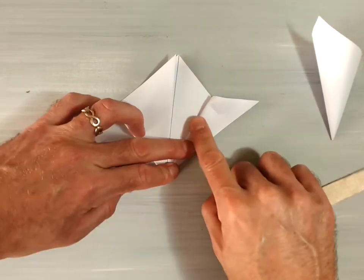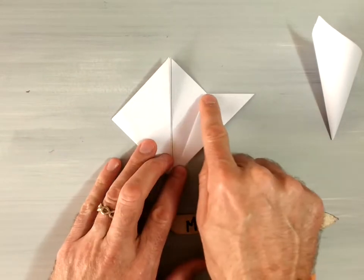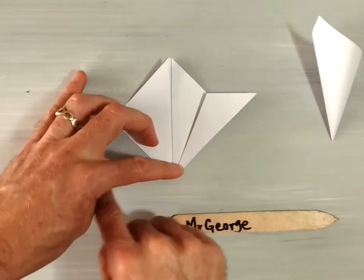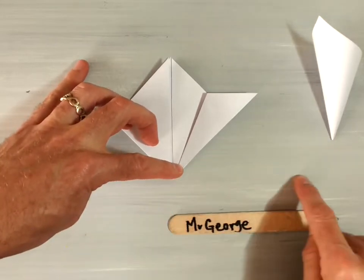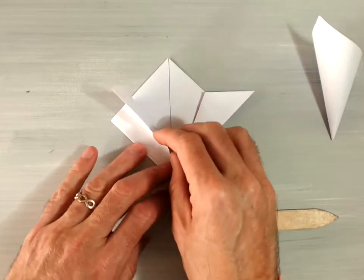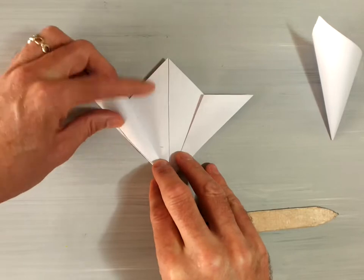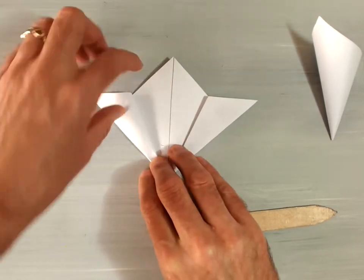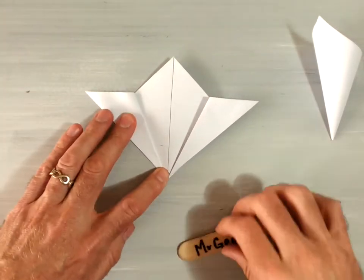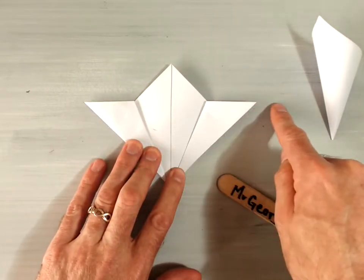It should look something like this when you're done, and when you're done this edge here should be horizontal with the bottom of your original triangle. Repeat this step on the opposite side, folding the inside edge to meet up with the outside edge creating an isosceles triangle so that this line that's horizontal runs all the way through your model.